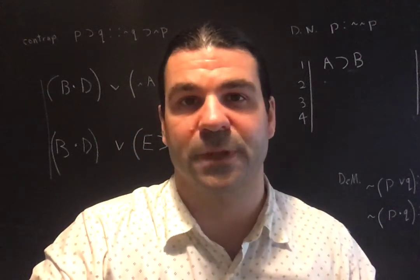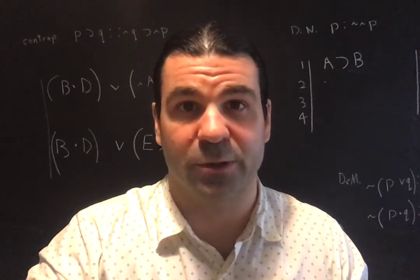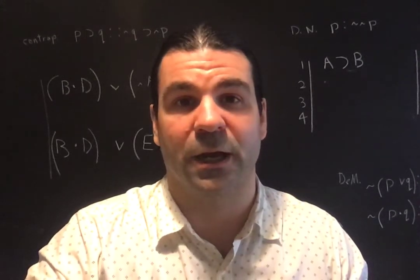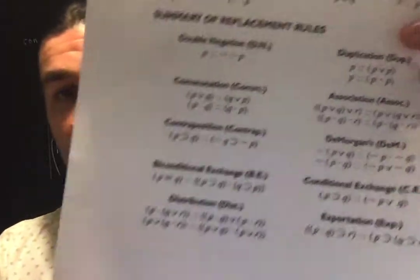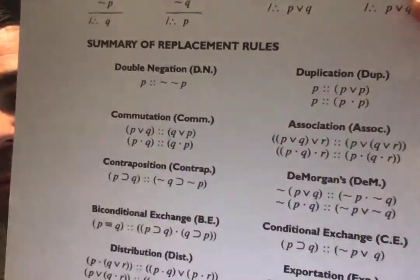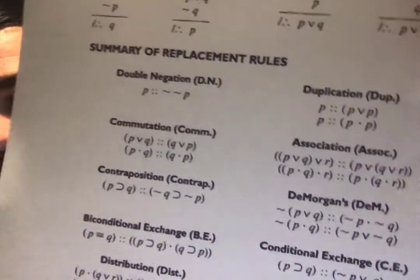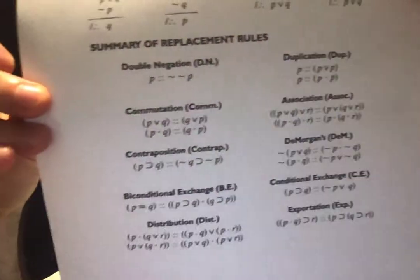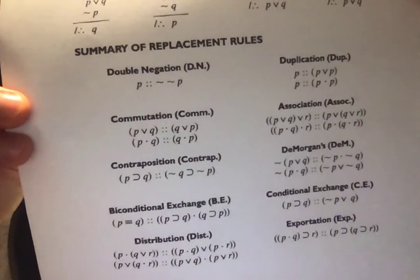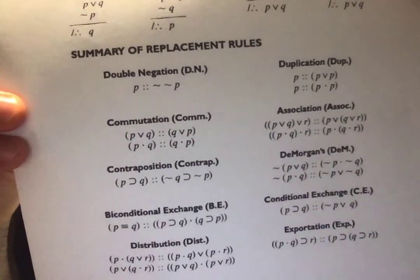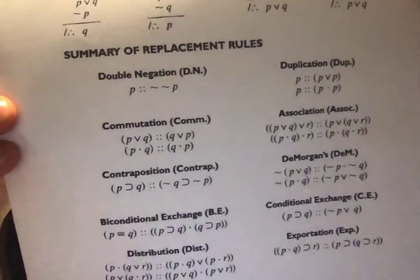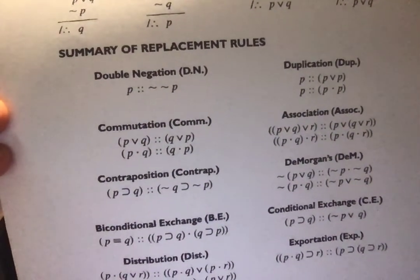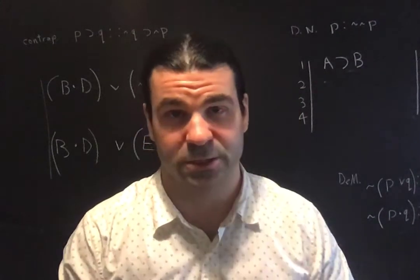Unit 8, part 2. As I was saying towards the end of part 1, our replacement rules — our Unit 8 rules — are rules presenting us with pairs of formulas. This is the inside cover of your book again, the list of all the rules. The pairs of formulas, separated by the replacement sign — two double dots — the left-hand side and right-hand side stand in a relation of logical equivalence, not just logical implication like Unit 7.